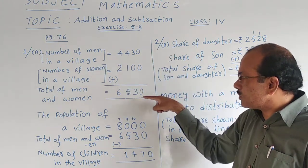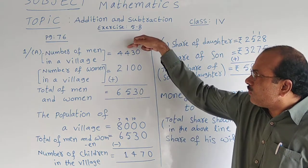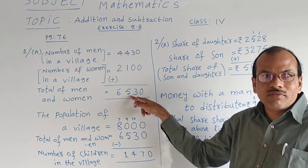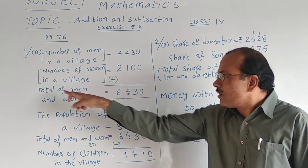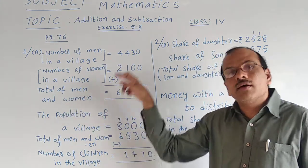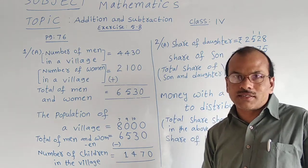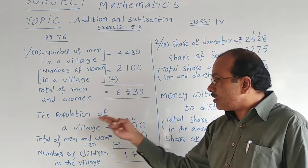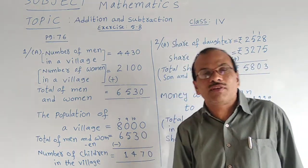Zero and zero addition is zero. Three and zero is three. Four and one addition is five. Four and two addition is six. Total of men and women in that village is six thousand five hundred and thirty.